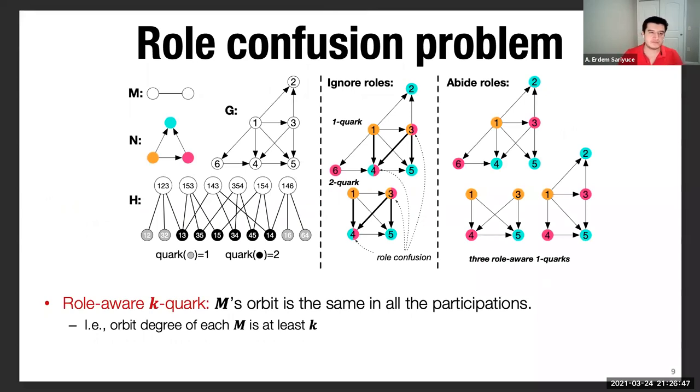To give an example, here we define M as an edge and N as an acyclic. It's a given graph. This is the hypergraph. The quark numbers are denoted. Those six edges have quark number of two. If we ignore the roles in the first quark definition, k quark basically gives us those two things. One quark, the entire graph and two quark with those four nodes. However, if you look at those, some of those nodes, for instance, these four, four serves as red node in some of its participations and serves as the blue node in some other participations. That's what we call the role confusion, and we want to avoid that.